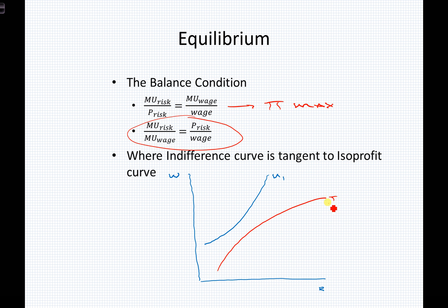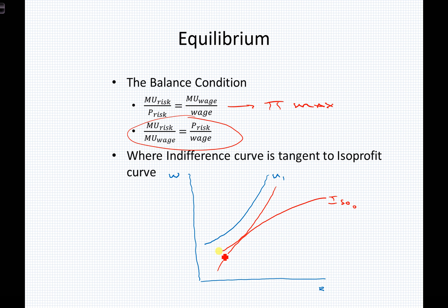If we have a scenario where we have an isoprofit of zero and a worker utility preference of U1 that are not tangent, this worker will not choose to work for this firm. In order for this worker to choose to work for the firm, the firm would have to increase the wage or decrease the risk — either one could bring the curves into tangency with the worker's indifference curve. But to do that, the firm would start to lose money. They may, however, be willing to take on a different kind of worker who gets their utility level from some combination of risk and wage that can also be found on the firm's isoprofit curve.